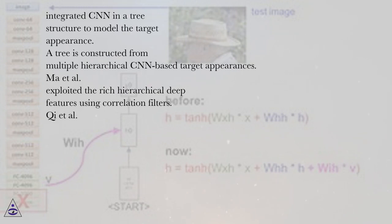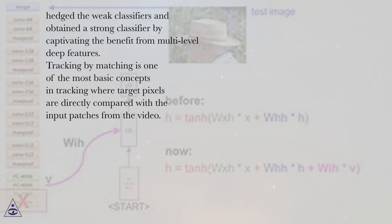Ma et al. exploited the rich hierarchical deep features using correlation filters. Qi et al. hedged the weak classifiers and obtained a strong classifier by captivating the benefit from multi-level deep features.